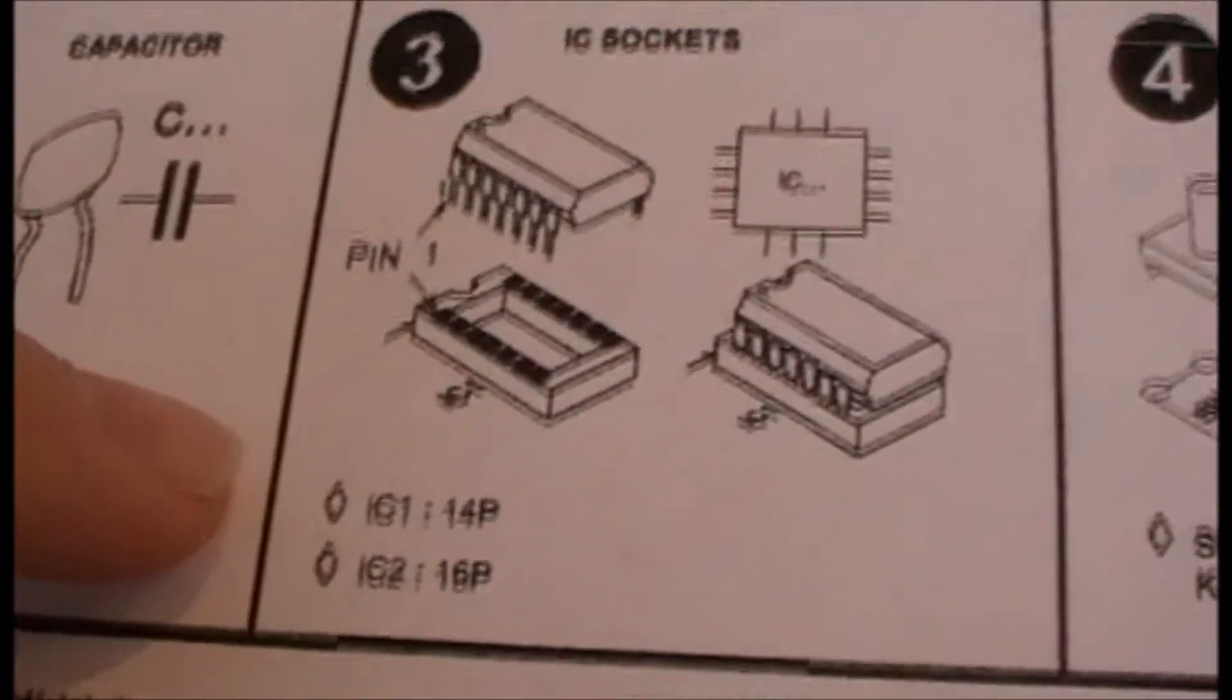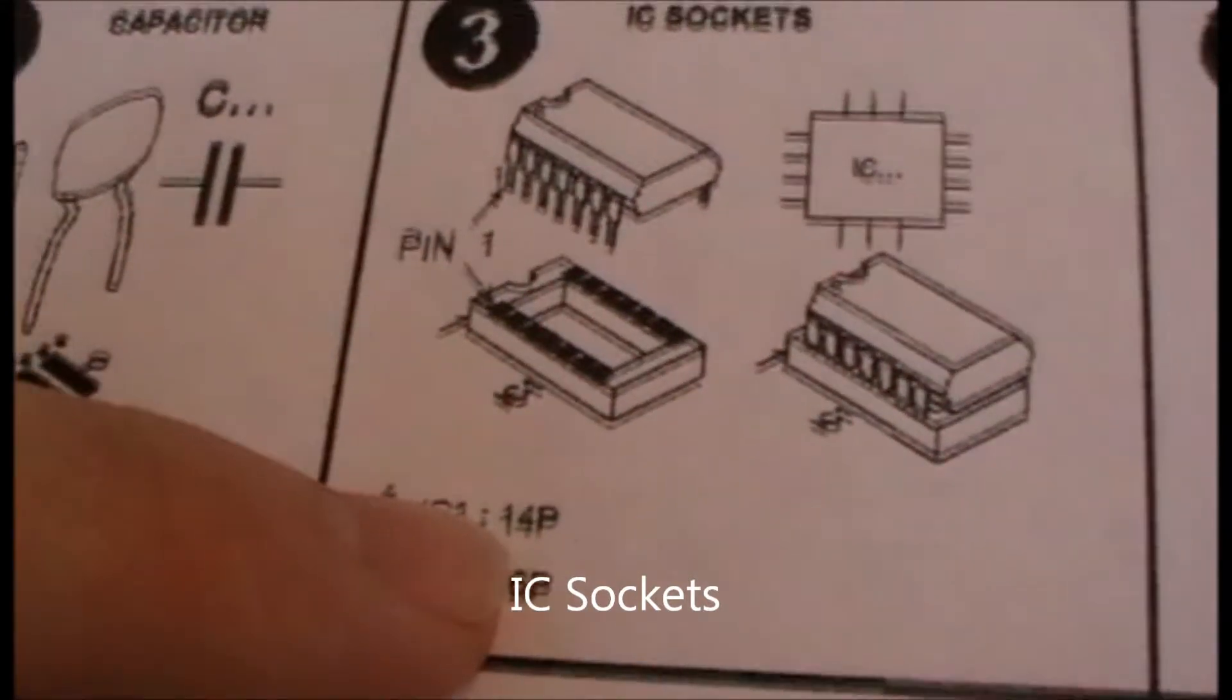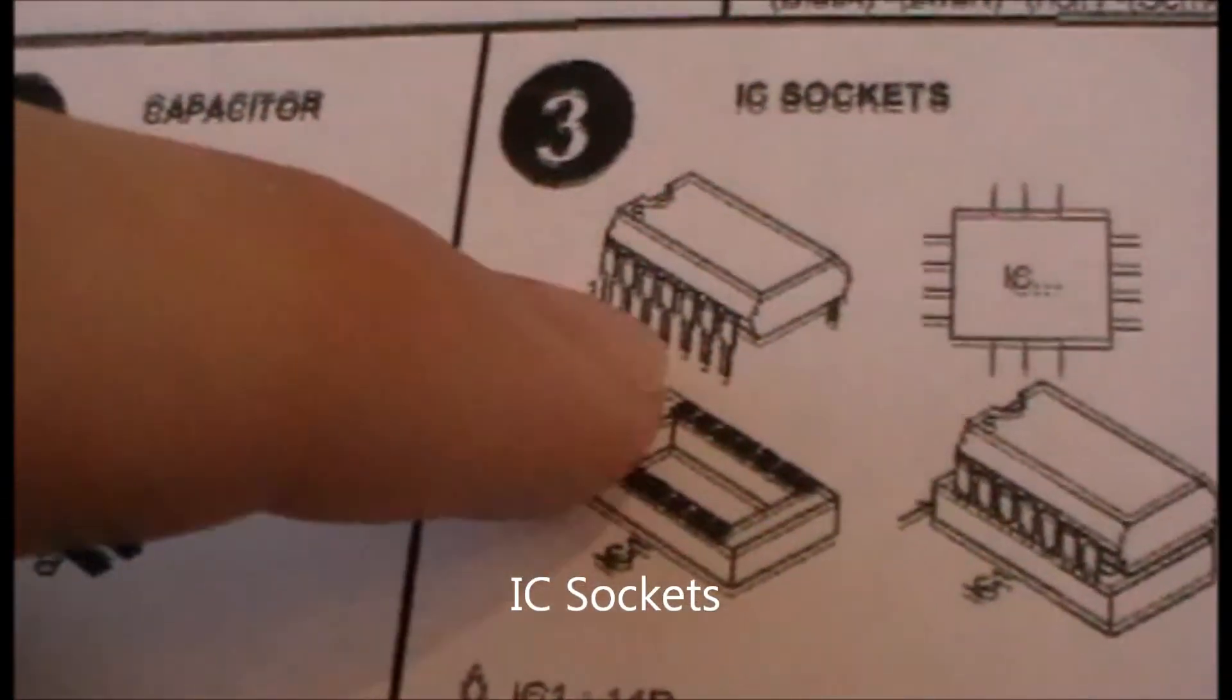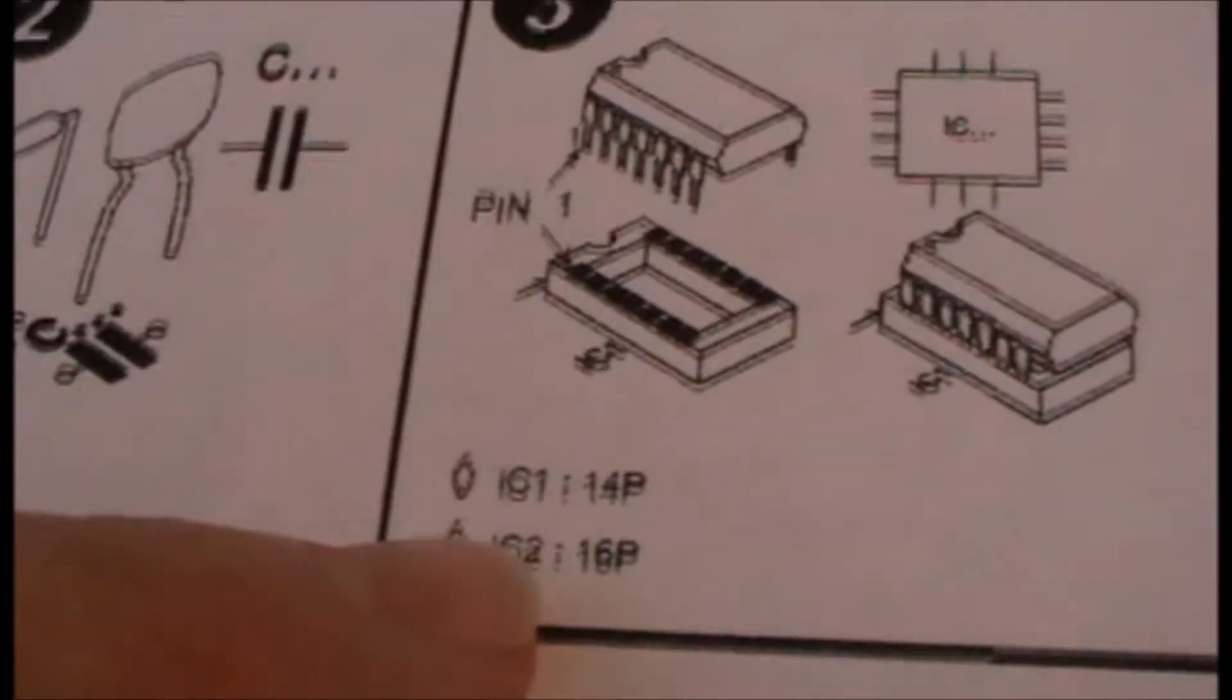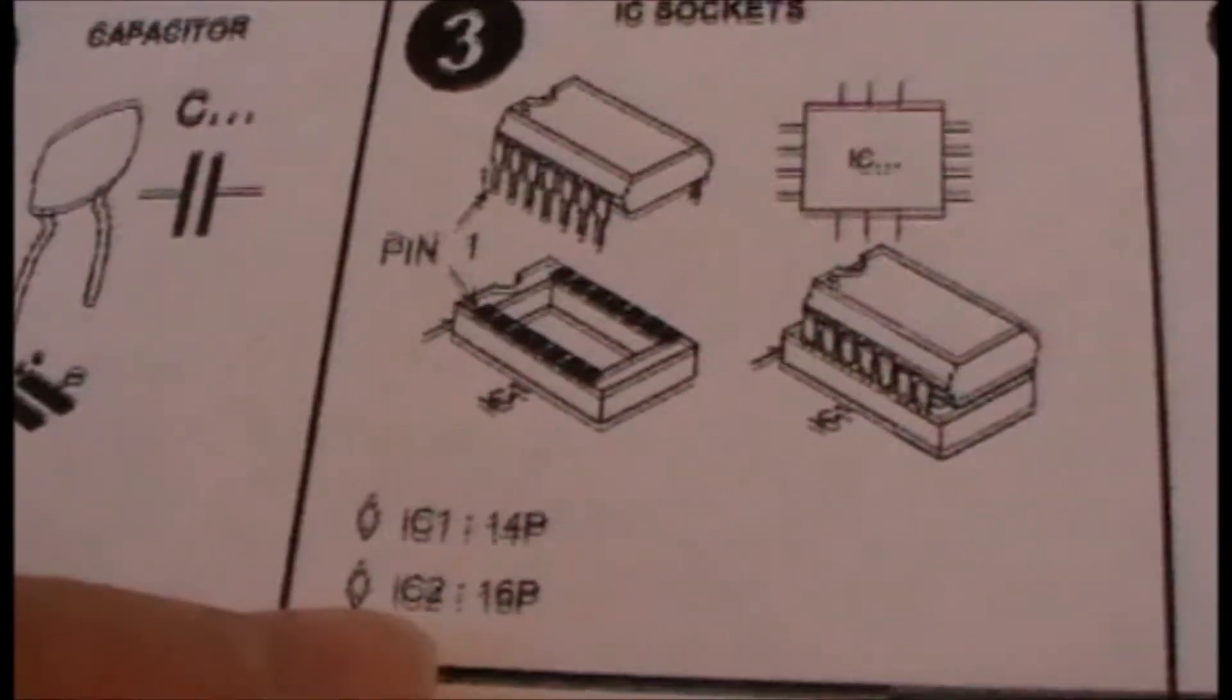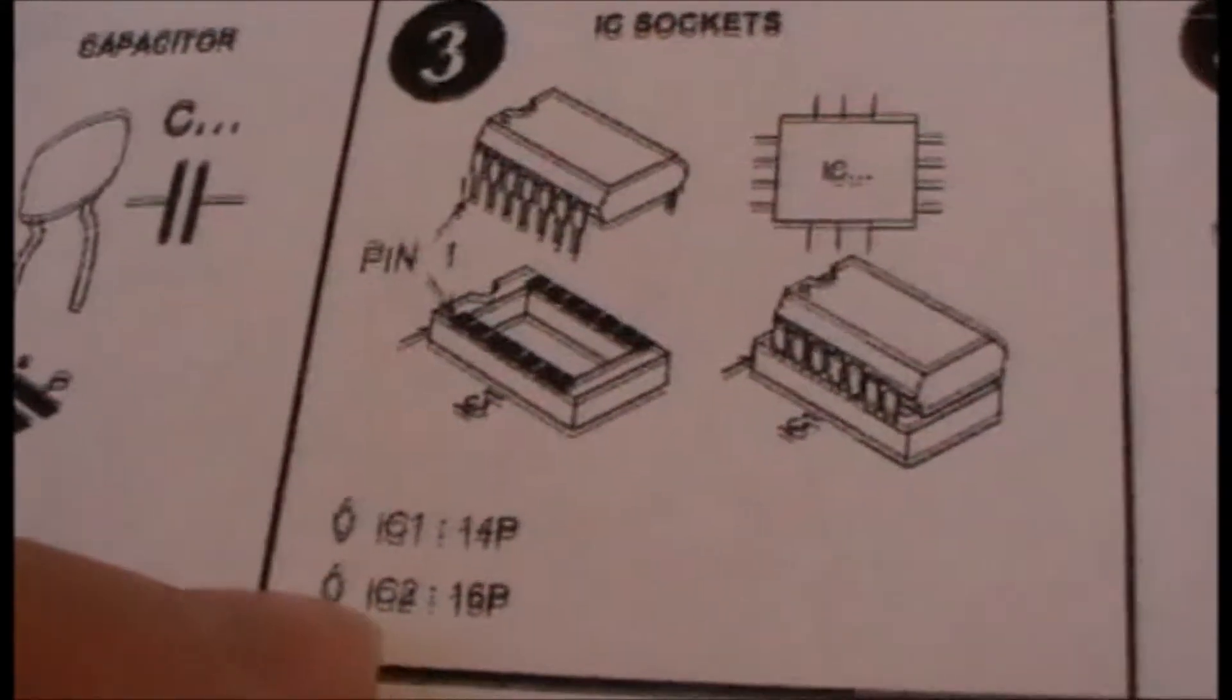Then there's the IC sockets. The 14-pin IC socket, the one that has seven legs on each side, goes in IC1. And the 16-pin IC socket goes in IC2 and has eight legs on each side.